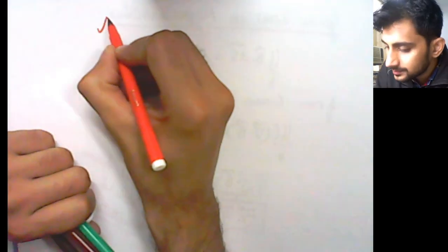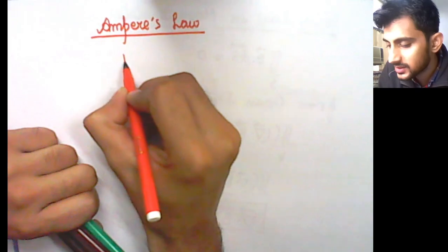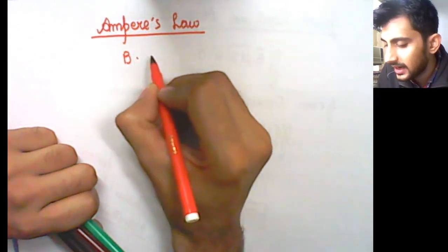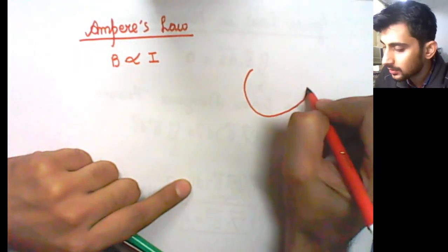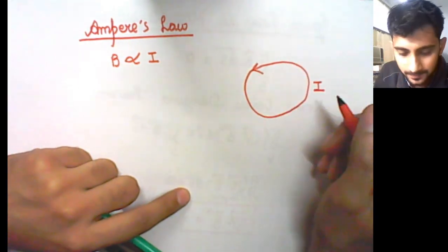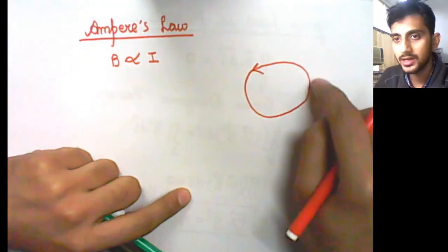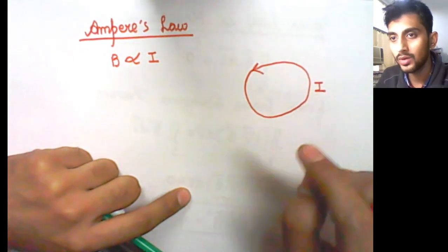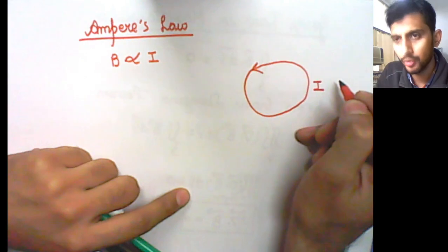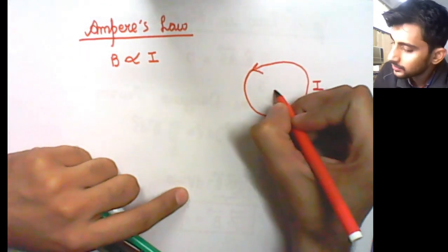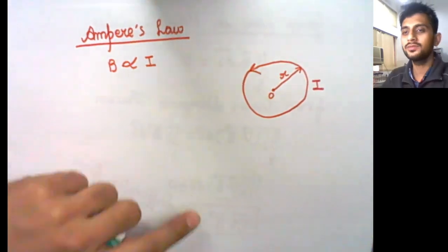Now we will study Ampere's law, which relates magnetic field and current. If you have a current carrying loop or coil in which current I is flowing, then if current flows in loops, a magnetic field is induced. If you put a magnet in this loop it will attract and repel. Inside this loop there will be a magnetic field, and outside this loop also there will be a magnetic field. The center of this coil is at a distance R — so the radius of this coil is R.